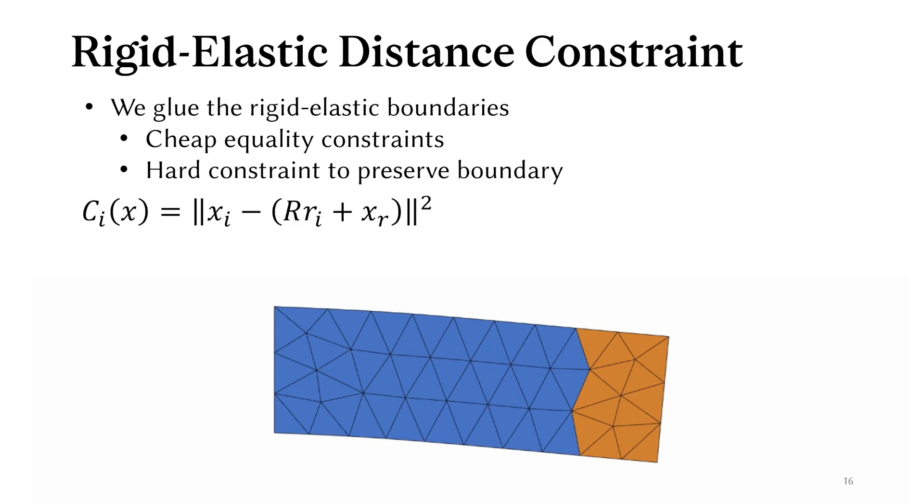Instead, we add simple and cheap distance constraints to glue the rigid and elastic representation of a vertex back together. These are hard constraints to enforce that the rigid and elastic positions exactly match. This also keeps the rigid body boundary undeformed, which is important to prevent having to recompute the rigid body properties at each iteration.